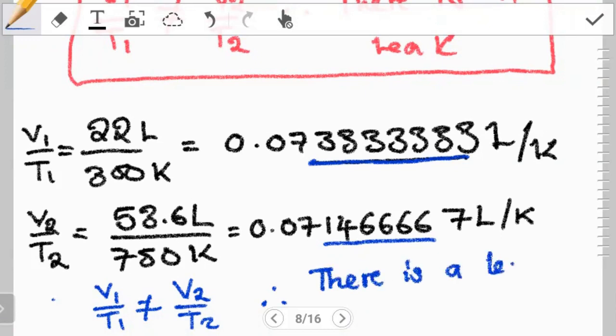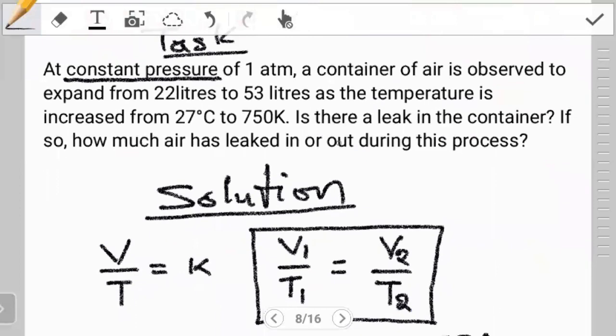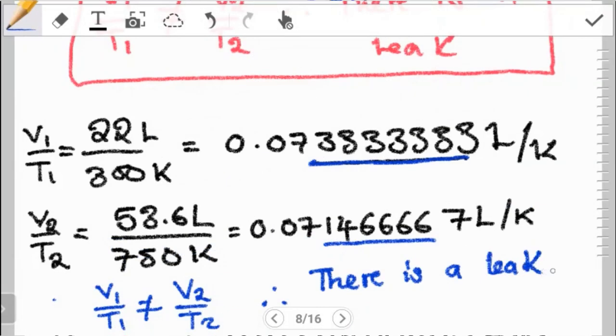Now if there is a leak, the second part of the question is asking if so, how much air has leaked in or out? Now if you compare what we have, the initial value that we had initially is greater than the ratio that we have after. So this means that there is a slight reduction in the volume, so there is a leak out. Now how do we determine how much has been lost?